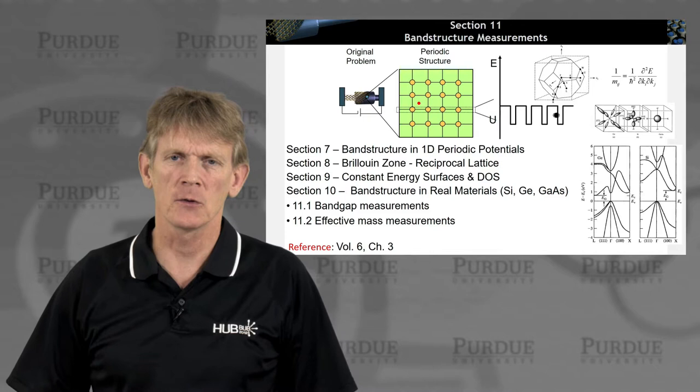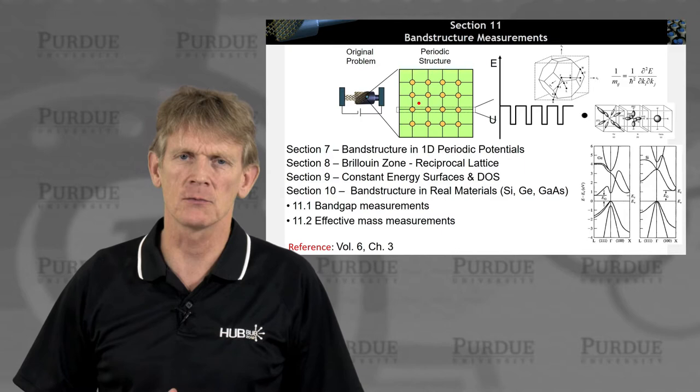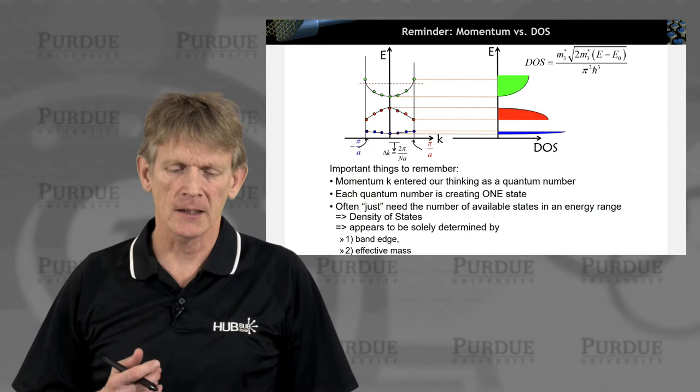And they really validate some of the theories that were derived here. Again, we'll need aspects of these real materials, we need constant energy surfaces, we need the Brillouin zone, and we need the band structure.